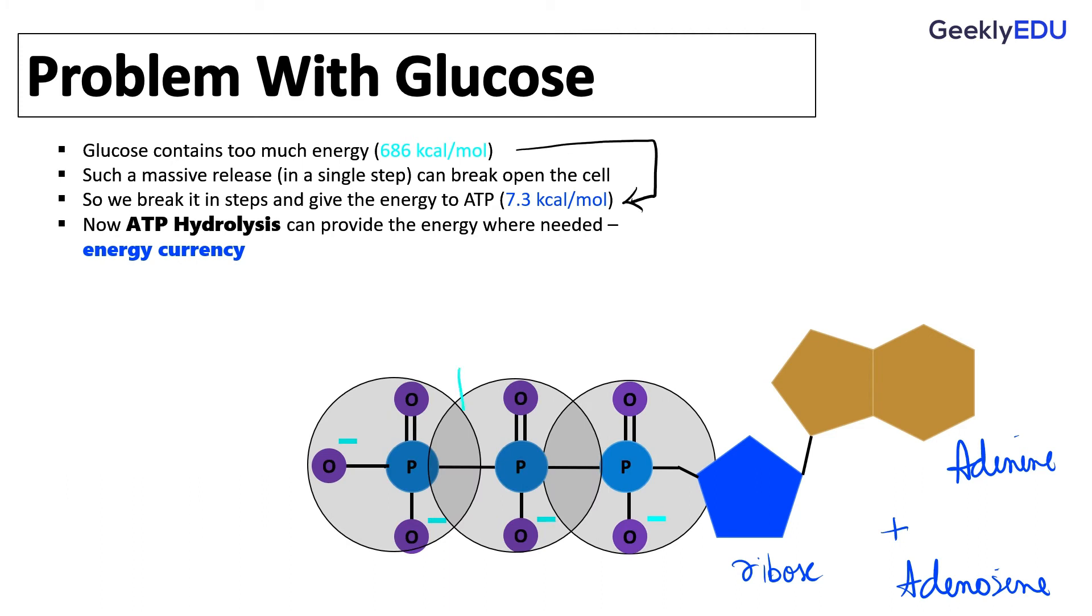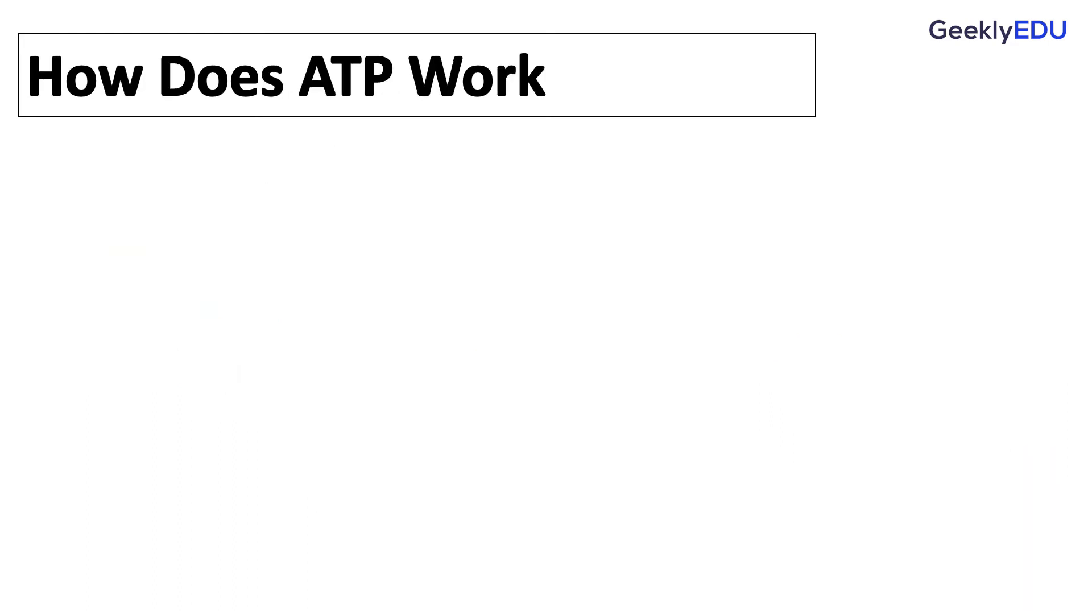So when you break these bonds, if you just break the last bond, you will have ADP plus phosphate and a release of 7.3 kilocalories per mole. Remember, one mole has 6.022 times 10 to the power of 23 molecules.